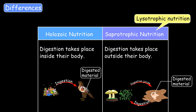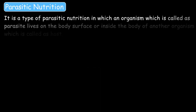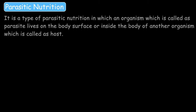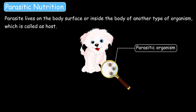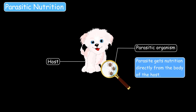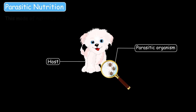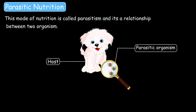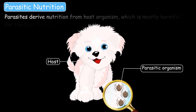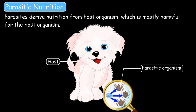Now let's learn about another heterotrophic mode of nutrition, which is parasitic nutrition. It is a type of heterotrophic nutrition in which an organism called a parasite lives on the body surface or inside the body of another organism called the host. Parasites get nutrition directly from the body of the host. This mode of nutrition is called parasitism — it is the relationship between two organisms, the host and the parasite, where the parasite thrives at the cost of the host. A parasite derives nutrition from the host organism, which is mostly harmful for the host.